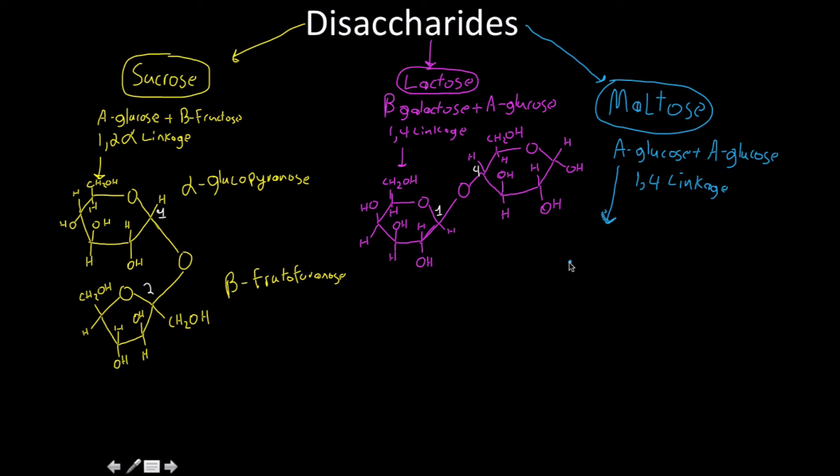Alright, so this is my structure of my maltose, right? Two alpha-glucoses right together, connected by a one-to-four linkage. I just like to show you before. This is the first carbon here, and this is the fourth carbon here.